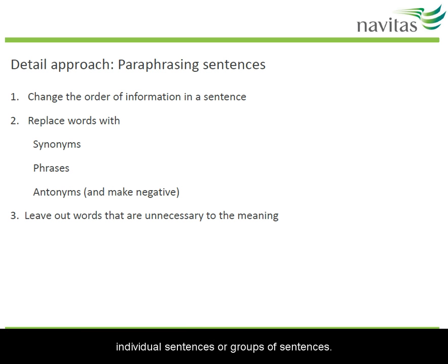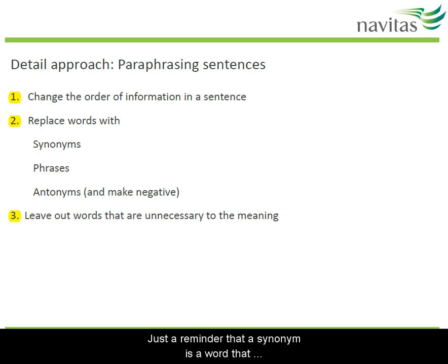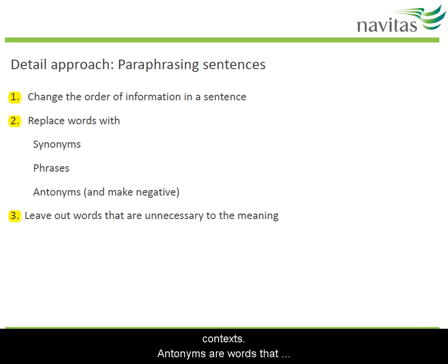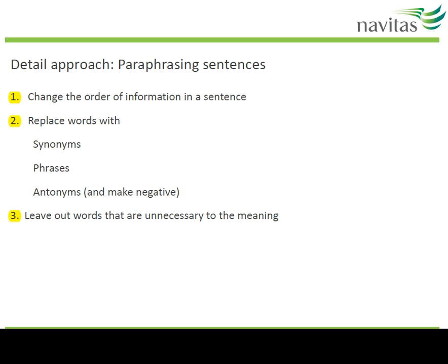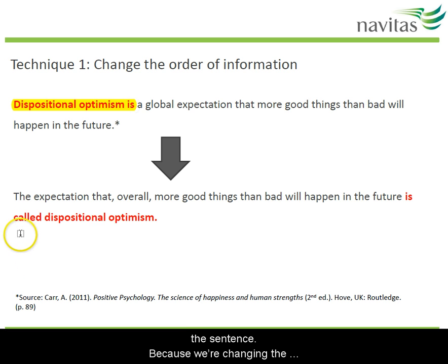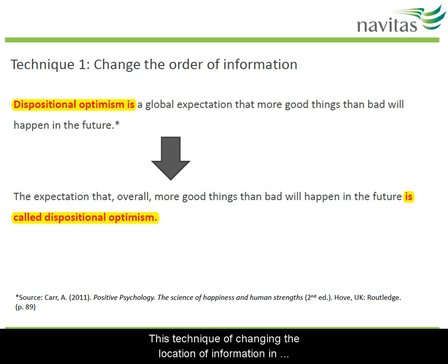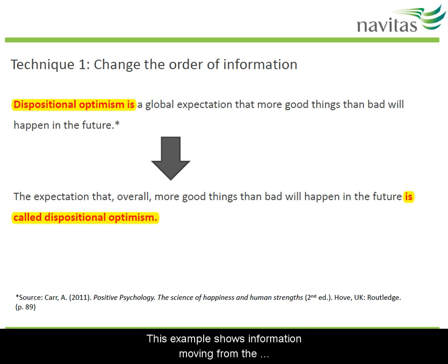Now let's look at techniques for paraphrasing individual sentences or groups of sentences. Here we're going to keep the original text open and do a combination of changing the order of information, replacing words, and leaving out words. A synonym is a word that means the same as the word you've got — for example, 'useful' and 'helpful' might be synonyms in certain contexts. Antonyms are words that mean the opposite, such as 'long' being the opposite of 'short.' As in the first example, here we've moved 'dispositional optimism' to the end of the sentence. Because we're changing the grammar of the sentence, we actually need to say 'is called dispositional optimism' in the paraphrase. This technique of changing the location of information is easy to forget, but it's really important to make the paraphrase different from the original.